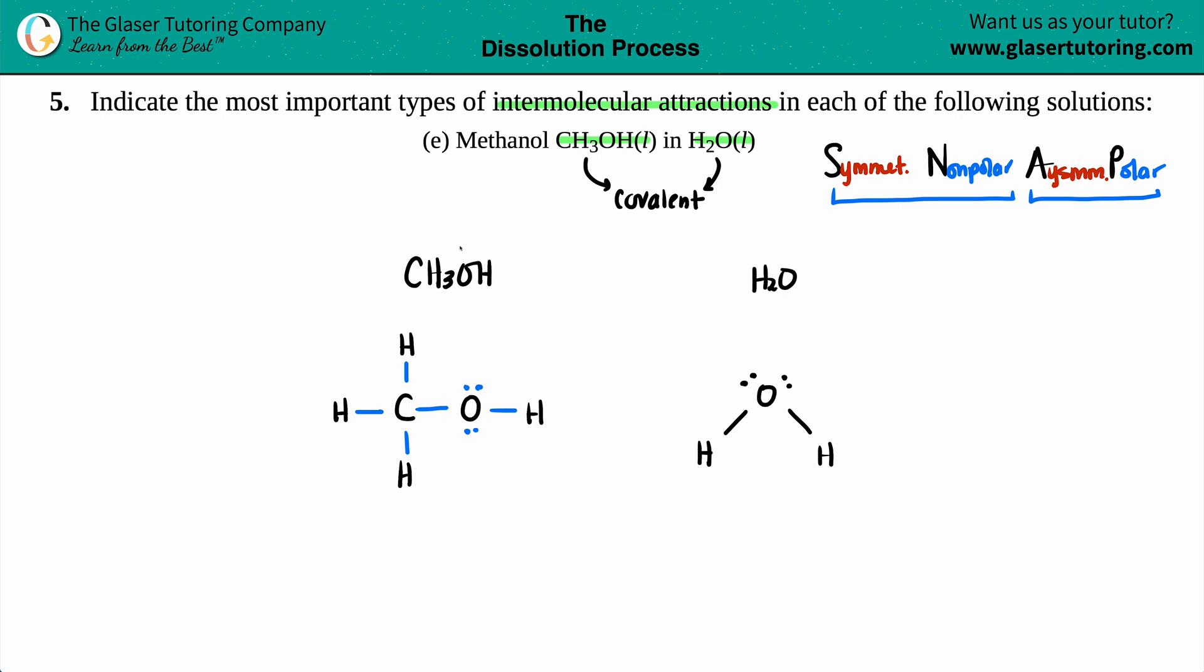So if I cut methanol right down the middle, this is clearly not the same. I have a CH3 on the left and the OH on the right. That's asymmetrical. So this would be a polar molecule.